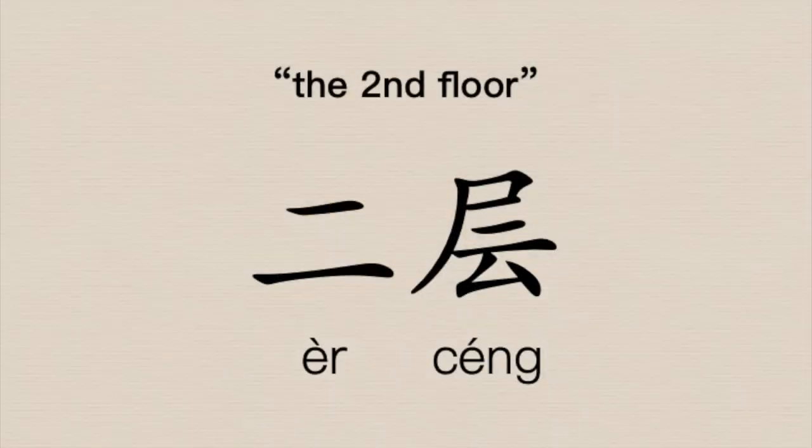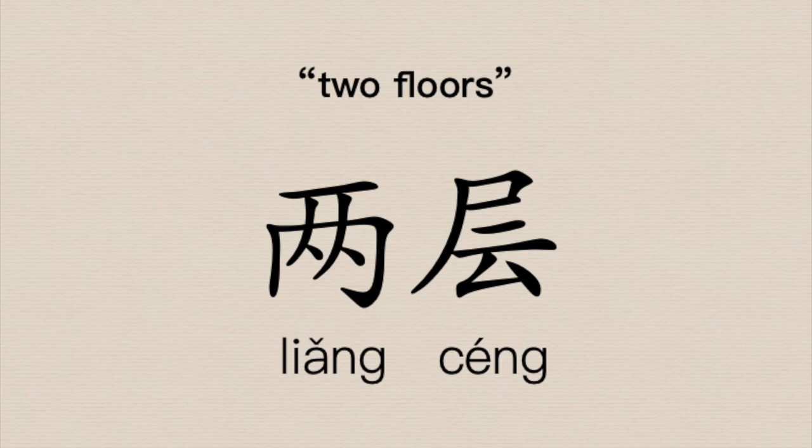We can use that concept to refer to other things — for example, the second floor of a building. That's the name of a single floor, so we use 二: 二层 (the second floor). If we switch out 二 from 二层 and put in 两, making it 两层, all of a sudden we are counting floors — giving an amount of floors. 两层 means 'two floors.' We don't know which two floors — they could be the 4th and 5th, or the 7th and 28th. We're just talking about a quantity of floors, as opposed to 二层, which means the second floor specifically.